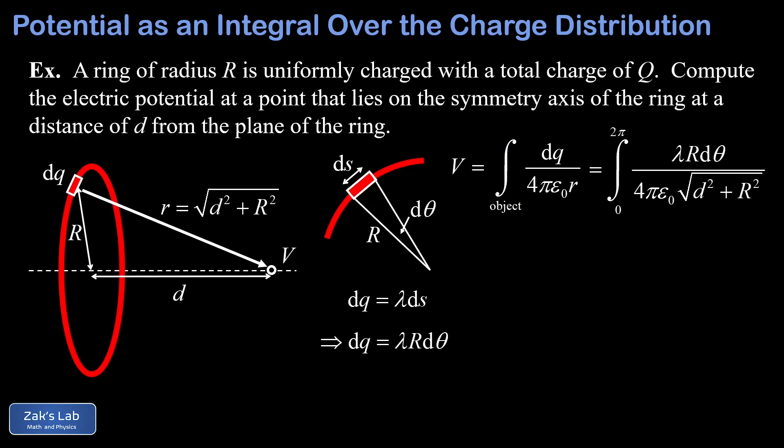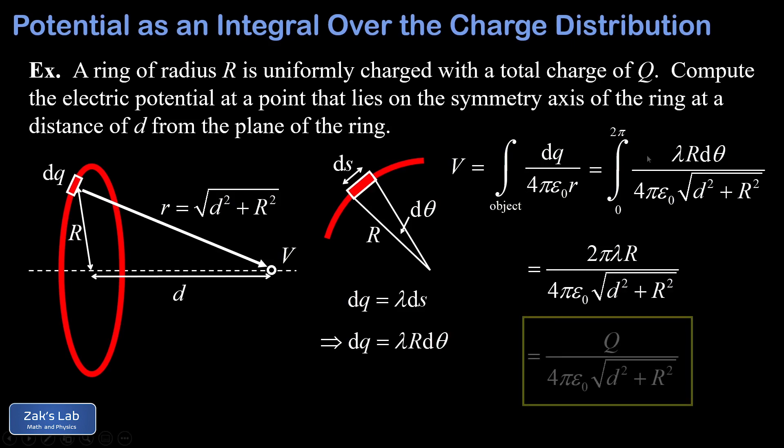We're in luck because everything inside the integral is constant except for dθ. So all constants pull out of the integral, and integrating dθ from 0 to 2π just gives 2π in the numerator, leaving 2πλR over 4πε₀√(d² + R²). To express the answer in terms of total charge Q rather than λ: the factor 2πR is the circumference of the ring, and λ times length gives total charge Q. So the electric potential due to the ring is Q over 4πε₀√(d² + R²).